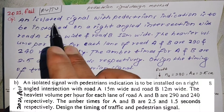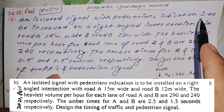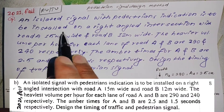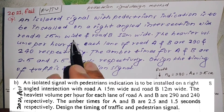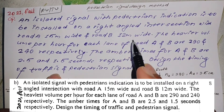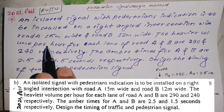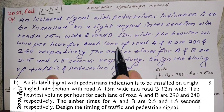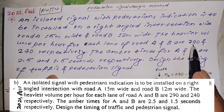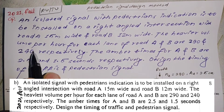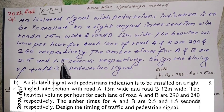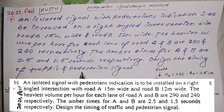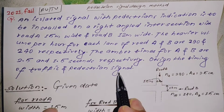An isolated signal with pedestrian indication is to be installed on a right-angle intersection with Road A, 15 meters wide, and Road B, 12 meters wide. The heavier volume per hour for each lane of Roads A and B are 290 and 240 respectively. The amber times for A and B are 2.5 and 1.5 seconds respectively. Design the timing of the traffic and pedestrian signal.